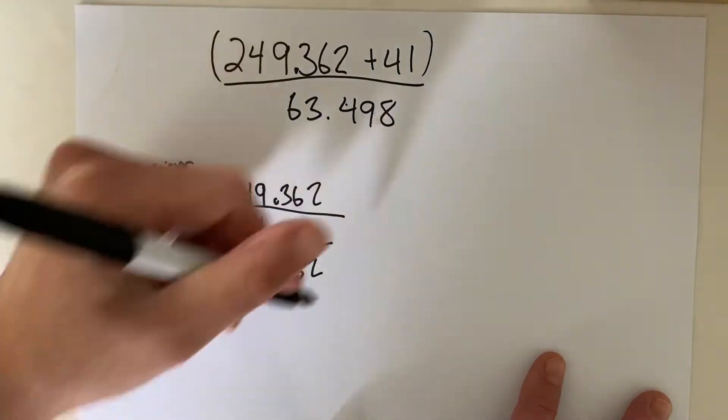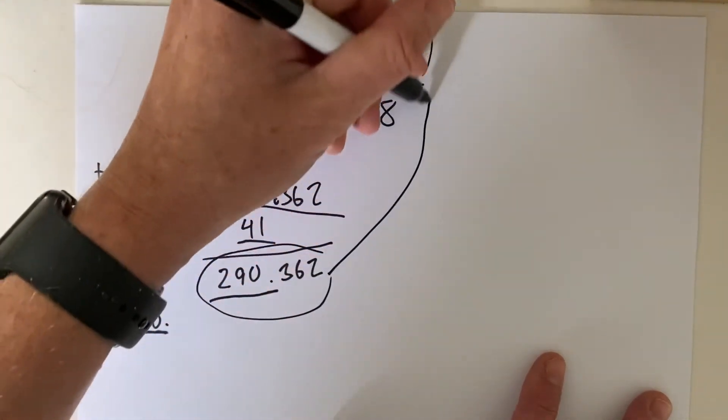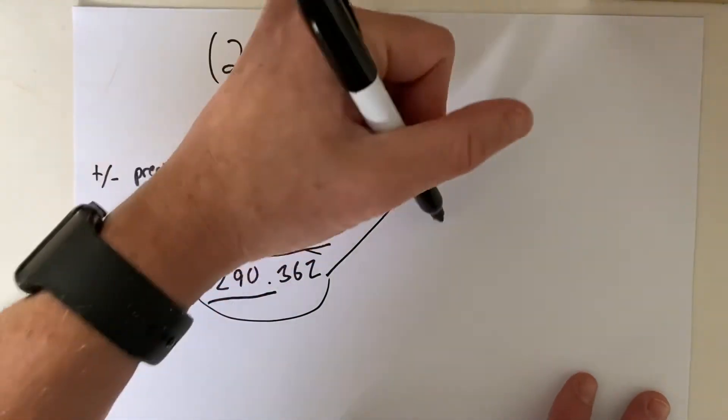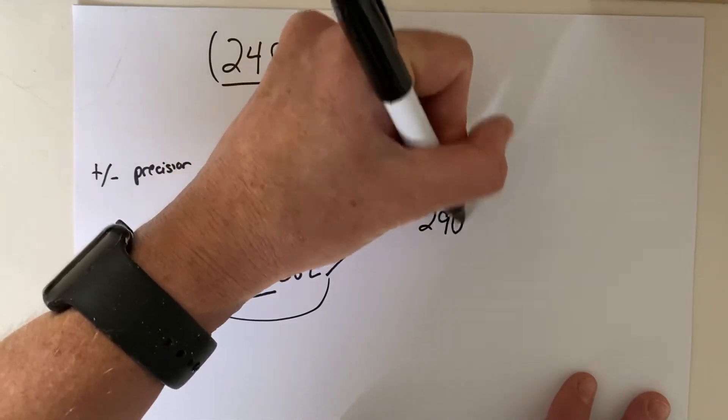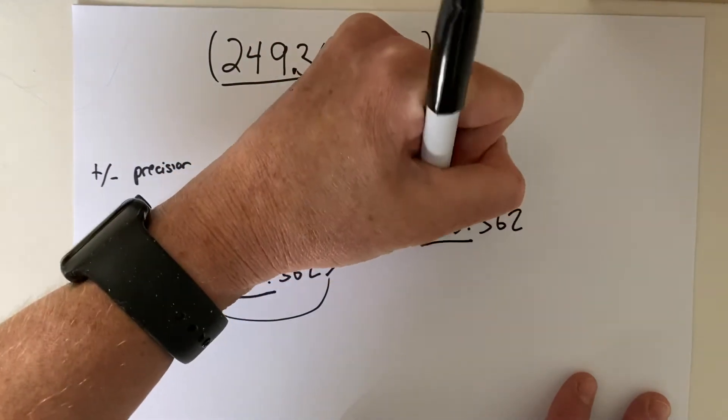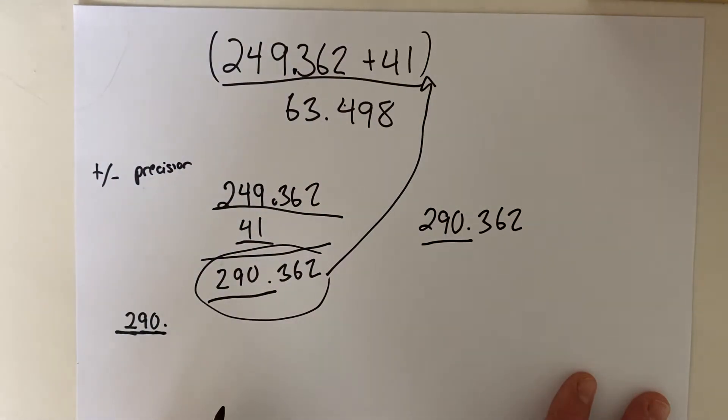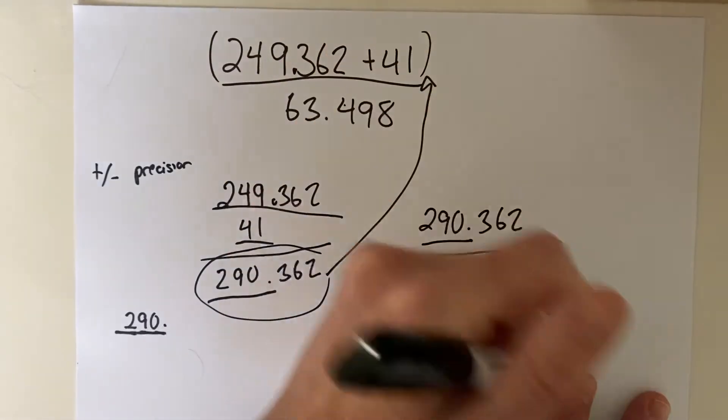Now we can take that and plug it back up here. So in other words, now we have 290.362, of which we know three sig figs because we know it to the ones place. We divide that by 63.498.